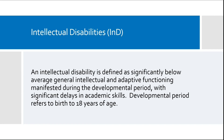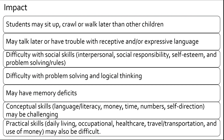An intellectual disability is defined as significantly below average general intellectual and adaptive functioning manifested during the developmental period, with significant delays in academic skills. The developmental period refers to birth to 18 years of age. The impact of this disability is that students may sit up, crawl, or walk later than other children. They may talk later or have trouble with receptive or expressive language. There may be difficulty with social skills, problem solving, and logical thinking. They may have memory deficits and challenges with conceptual skills such as language, literacy, money, time, and numbers, as well as practical skills such as daily living.